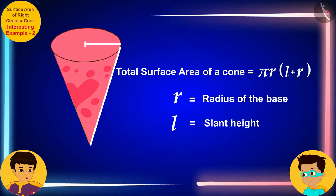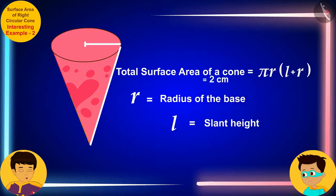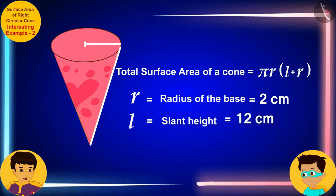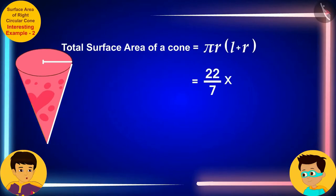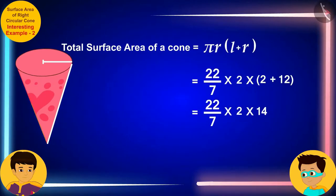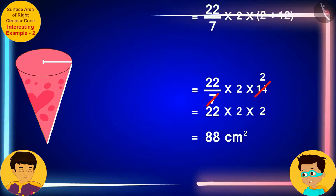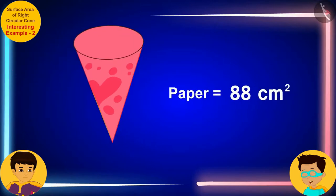The radius of the ice cream base is 2 centimeters and its slant height is 12 centimeters. Let me solve this by substituting these values for r and l respectively. The cone has a total surface area of 88 square centimeters. This means 88 square centimeters of paper has been used to cover the ice cream completely.